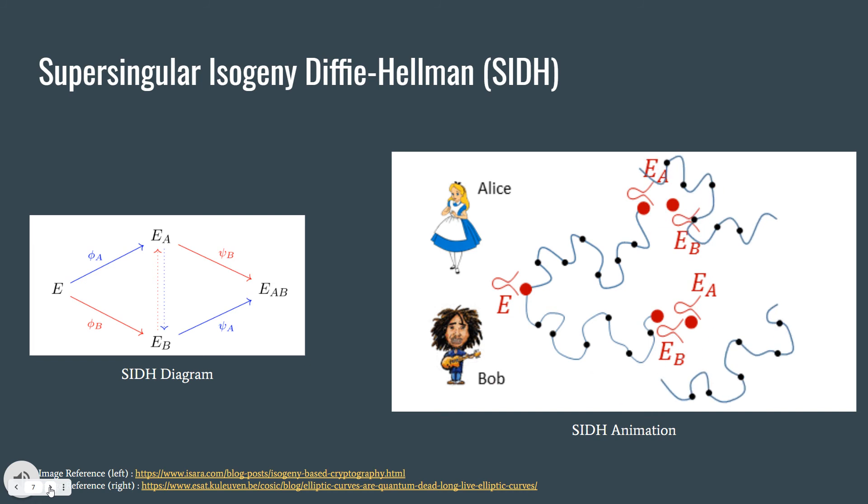In this slide, we can also see the picture on the right. The first slide is that both Alice and Bob start with the elliptic curve E and they compute EA and EB by using their secret isogeny maps. And then they exchange EA and EB and again compute the isogenies and conclude with EAB. And use the j-invariant of this EAB as their secret key.